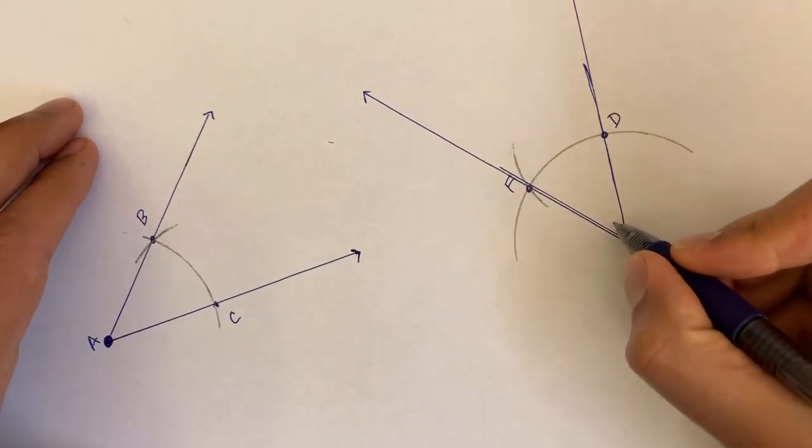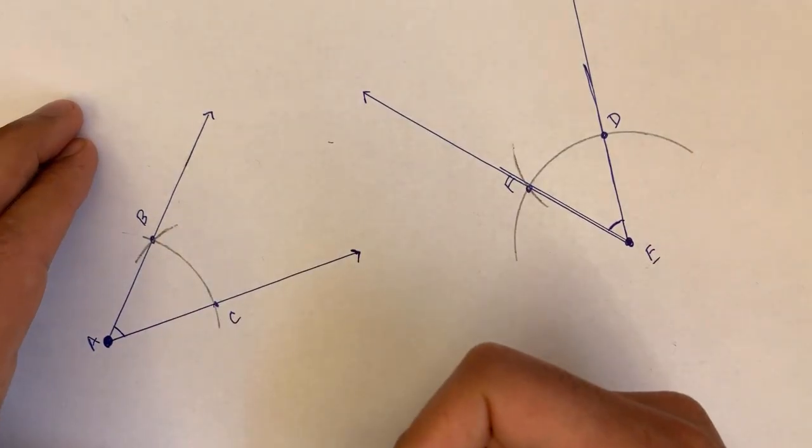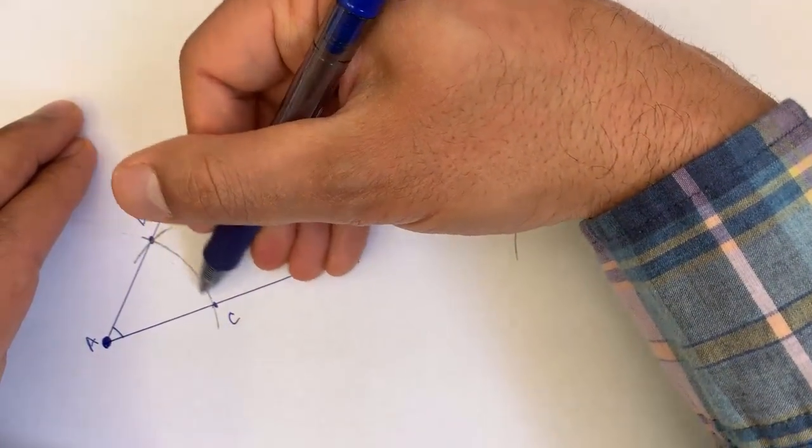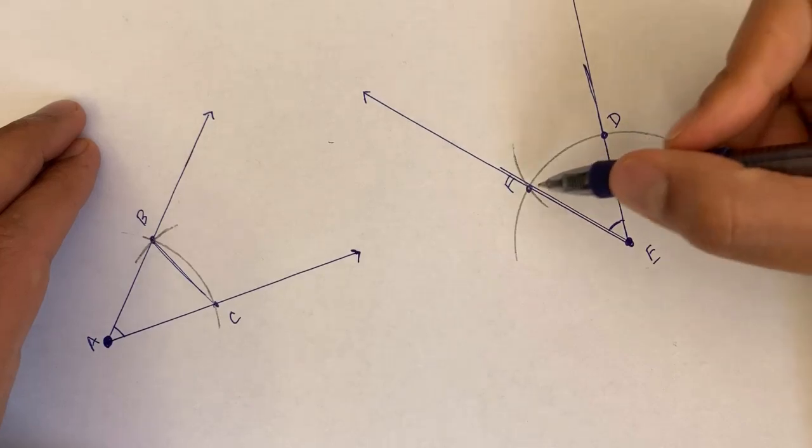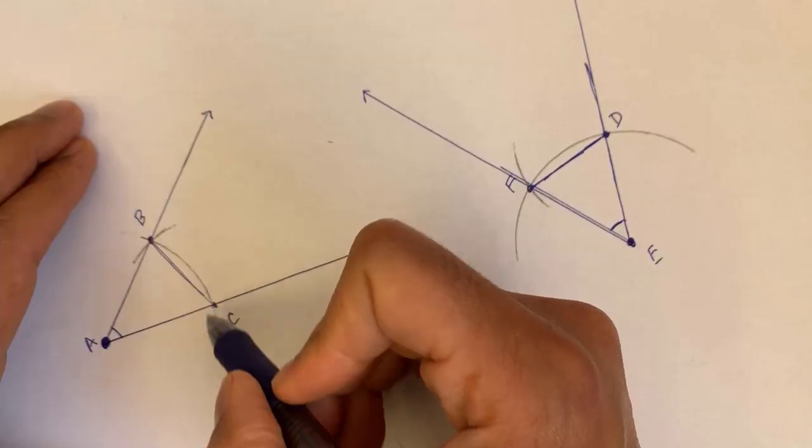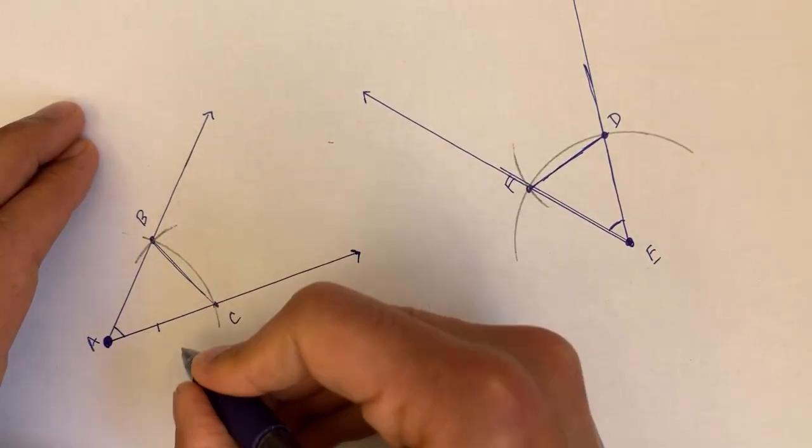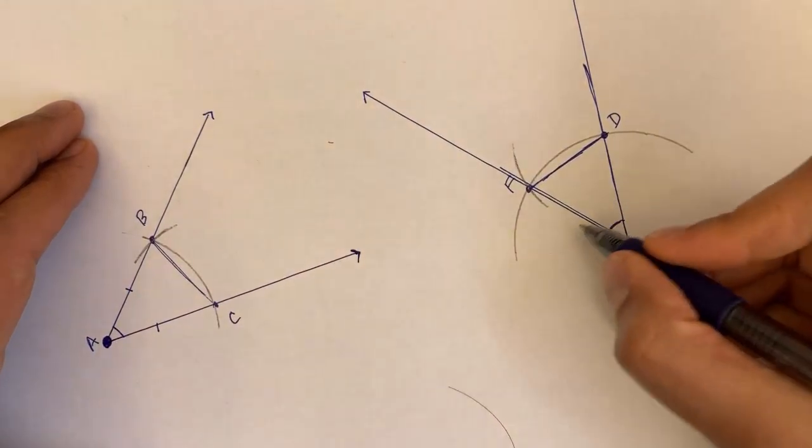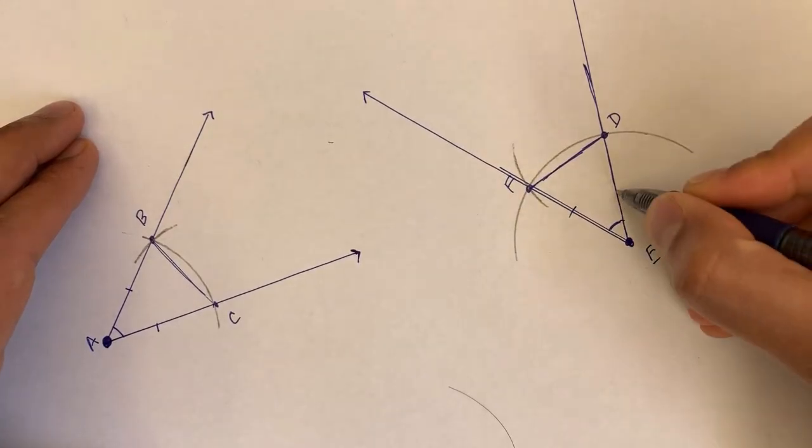Now, how do we know that this angle is congruent to this angle? Well, one way to do it is to think about triangle BAC and triangle DFE. When we drew that first arc, we know that the distance between AC is equivalent to the distance between AB. And we kept the compass radius the same, so we know that's also the distance between EF and the distance between ED.